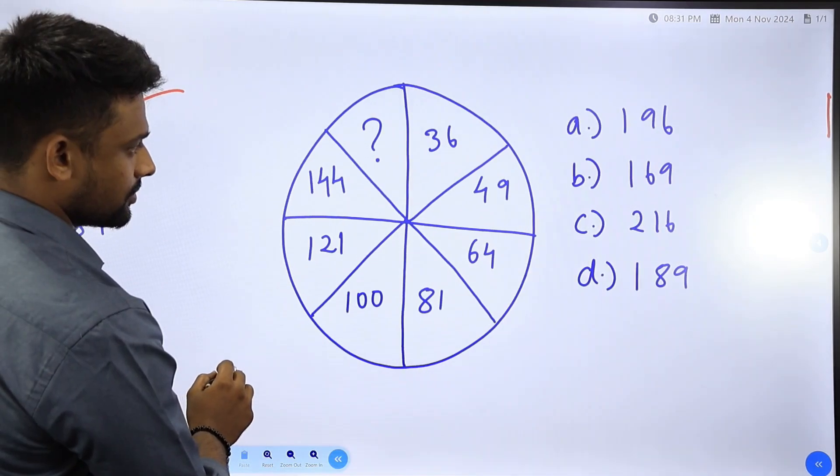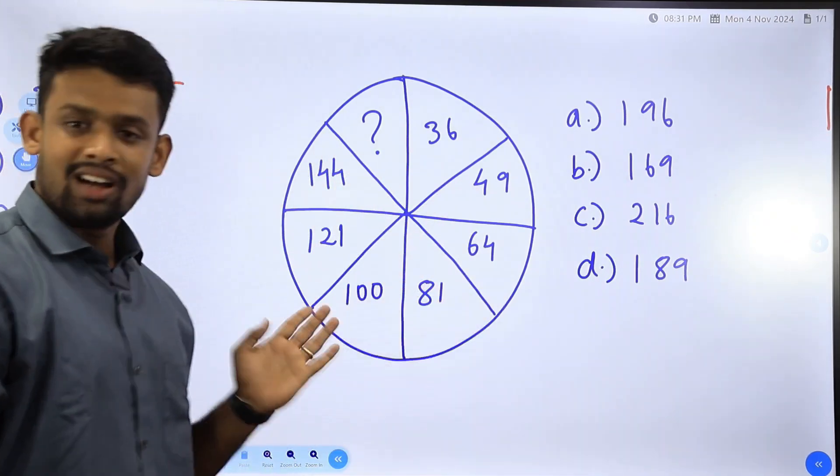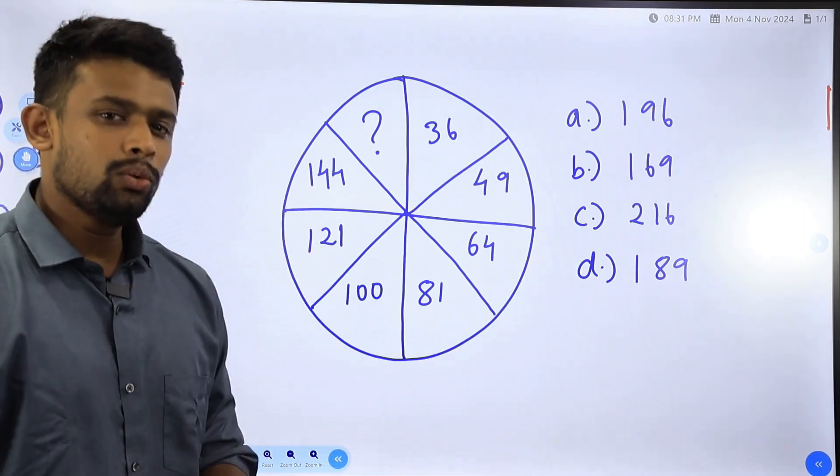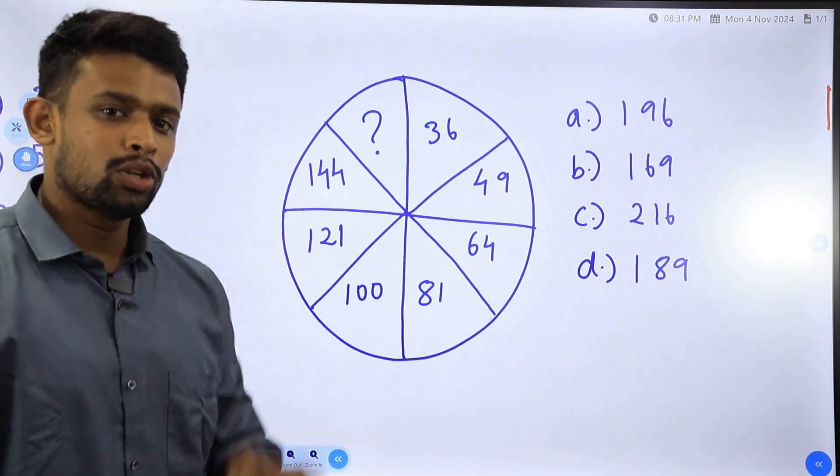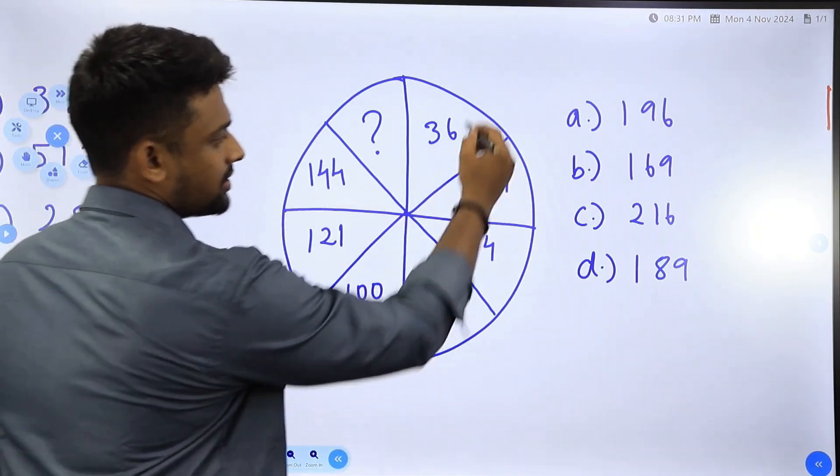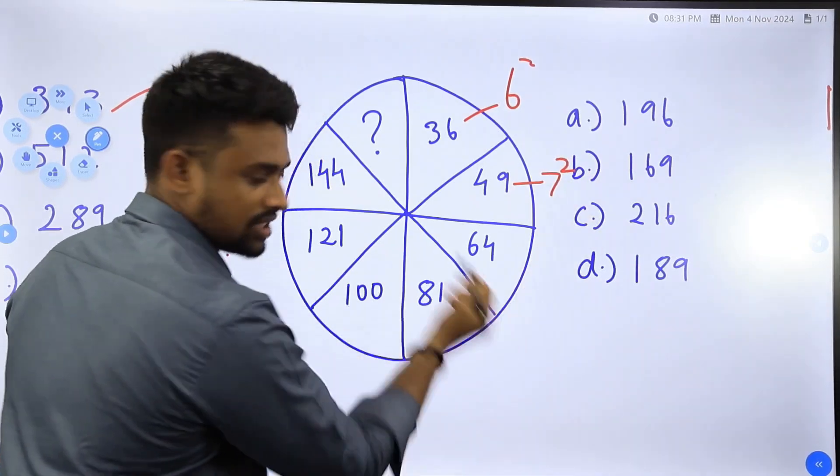36, 49, 64, 81, 100, 121, 144. By now you should have got it if you are thorough with square numbers. 36 is 6 square, 49 is 7 square, 64 is 8 square.